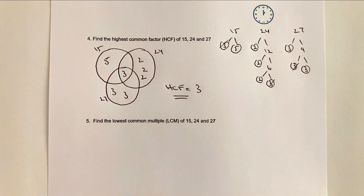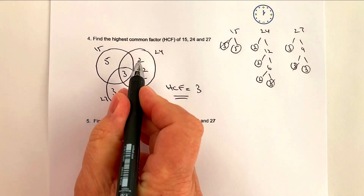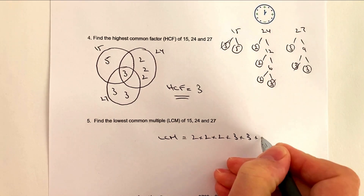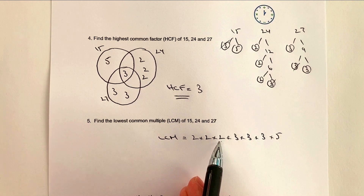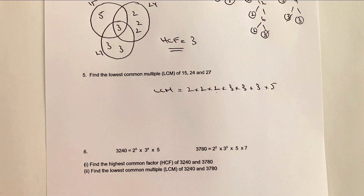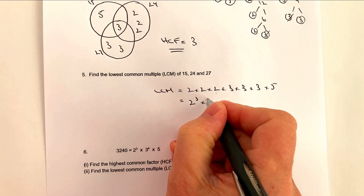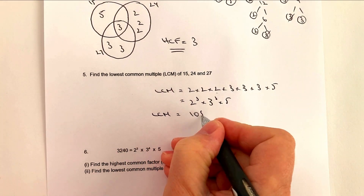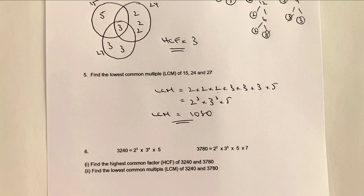The lowest common multiple is all of these numbers multiplied together. Writing them in ascending order: 2 × 2 × 2 × 3 × 3 × 3 × 5. You can also write this as 2³ × 3³ × 5, which is perfectly fine. Working out the calculation gives the LCM = 1080.